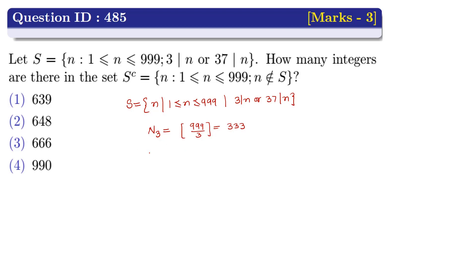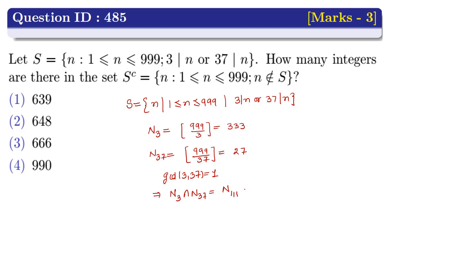Next, we have to find the number of elements divisible by 37, which is equal to the greatest integer of 999 divided by 37, which equals 27. Since GCD(3, 37) = 1, this implies the number of elements divisible by both 3 and 37 is equal to the number of elements divisible by 111, which is the greatest integer of 999 divided by 111, which equals 9.